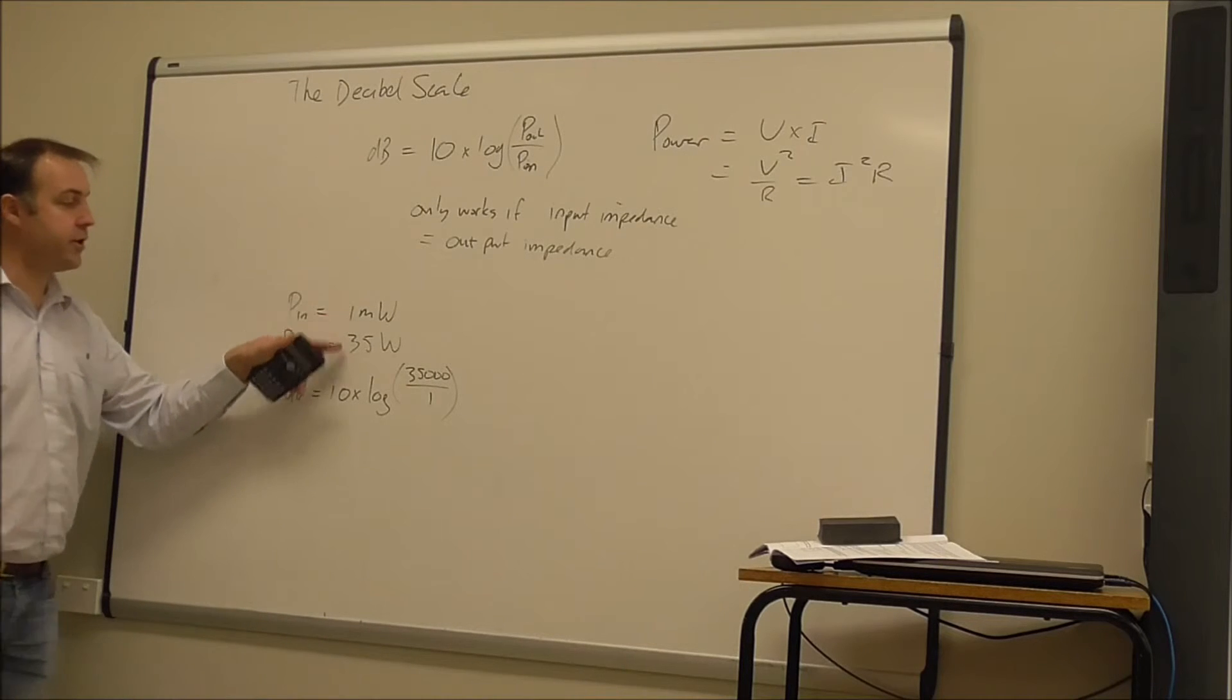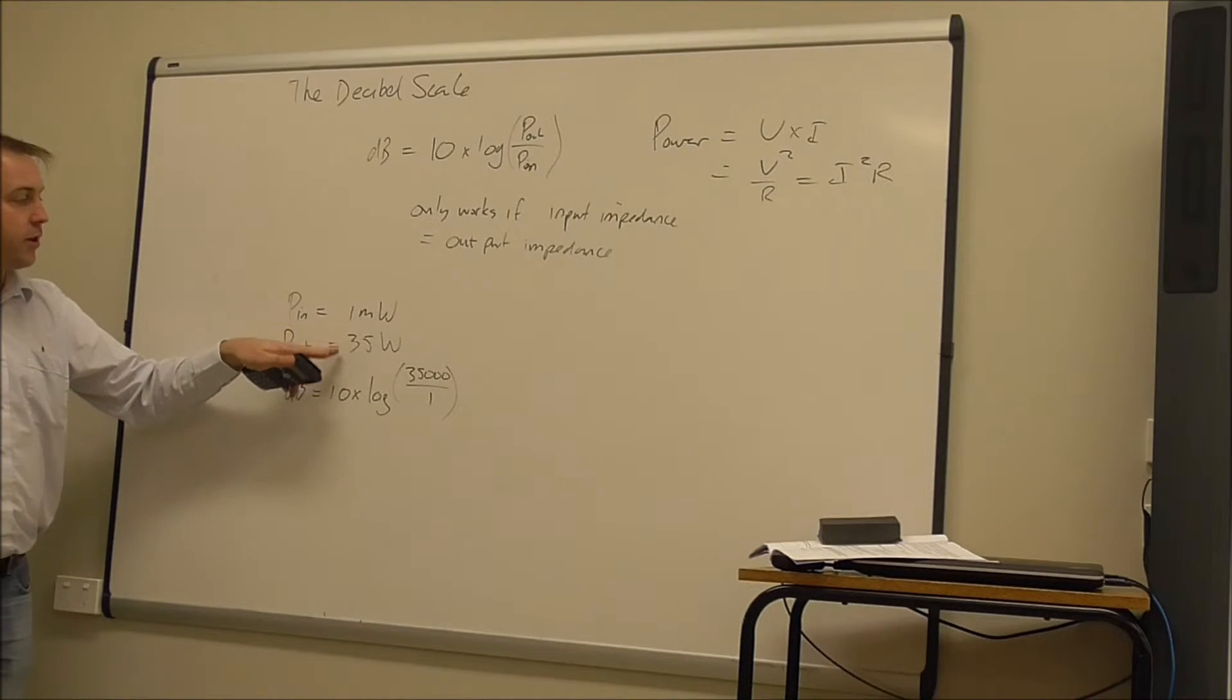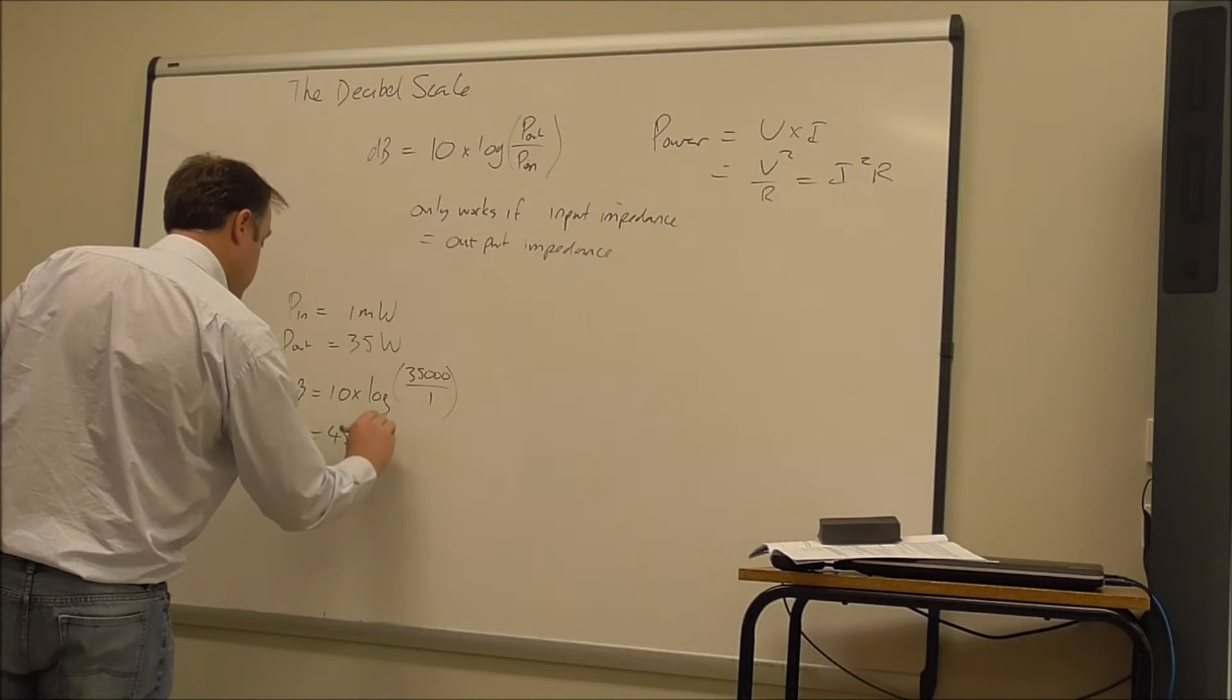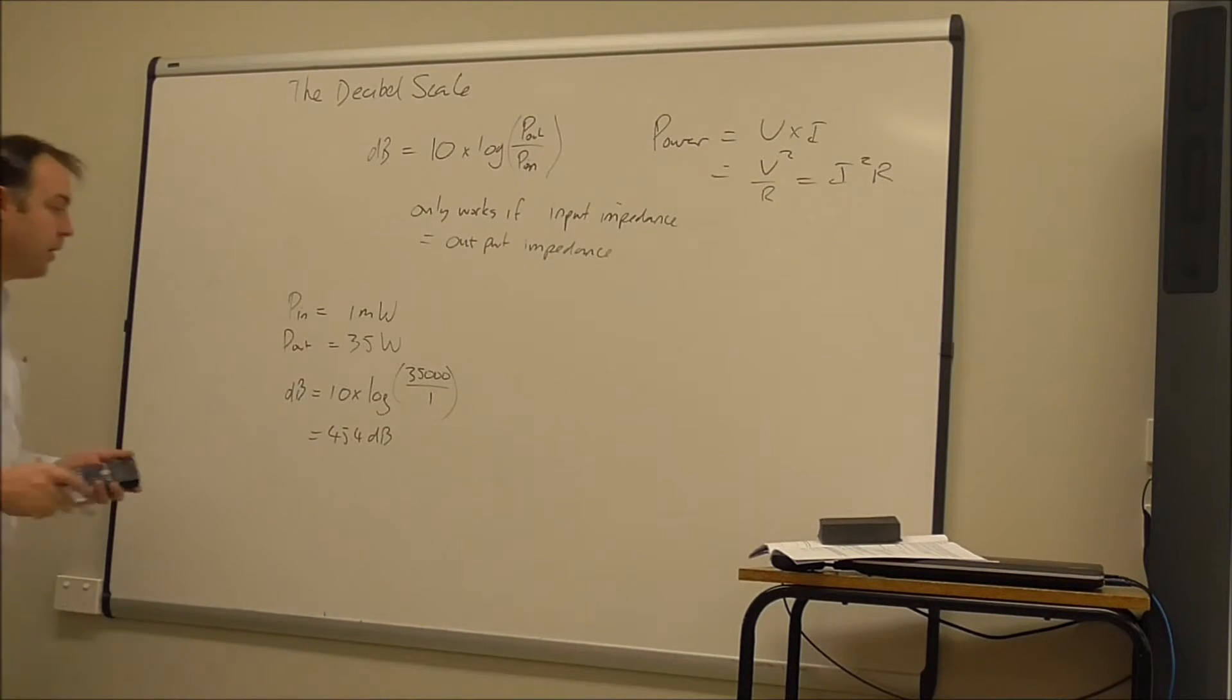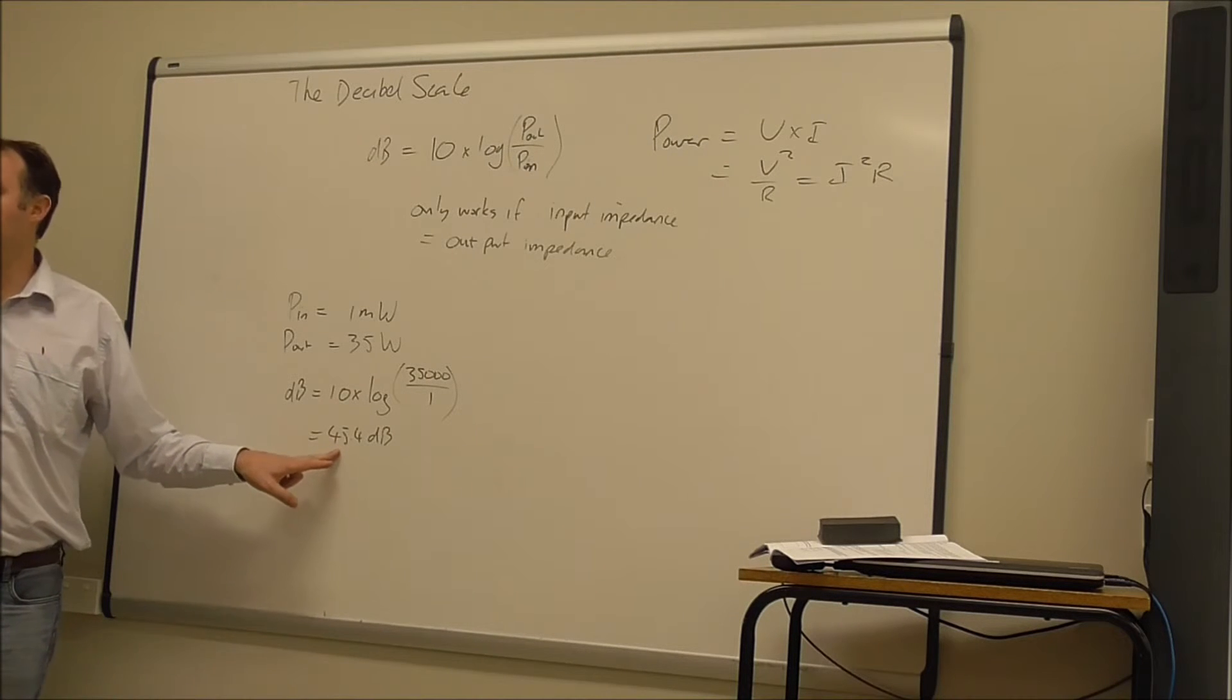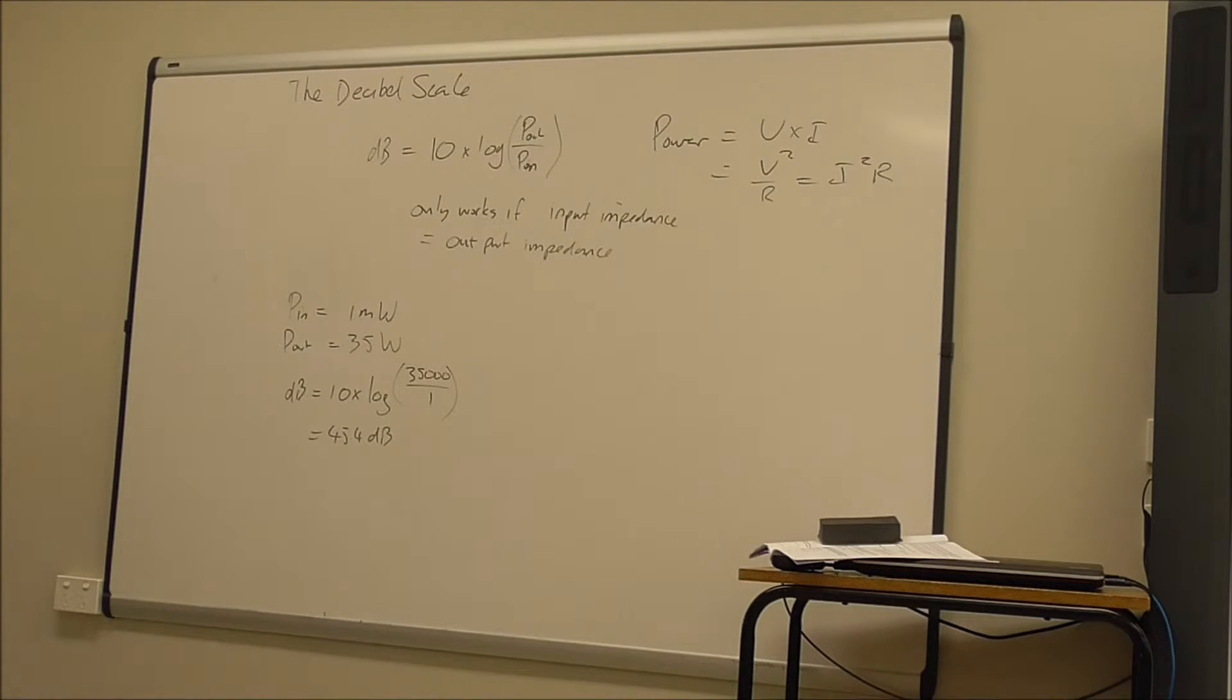So I had to convert them both to the same unit. I could have done it 35 divided by 0.001. Would have given me the same answer. And this is equal to 45.4. So the gain of an amplifier with this sort of output power and input power would be 45.4 dB. So the power gain is 35,000 times. But in decibels it's 45.4.